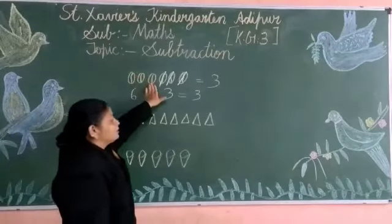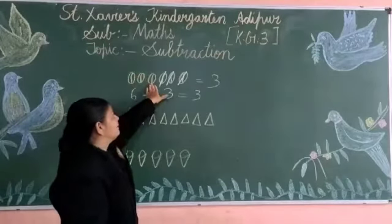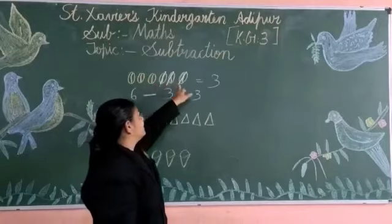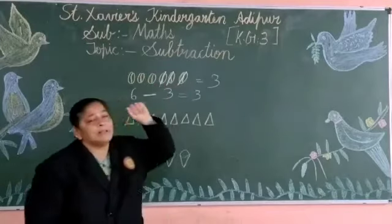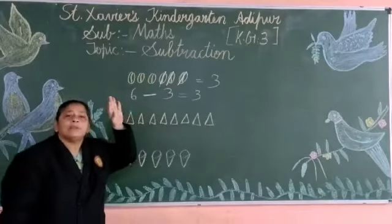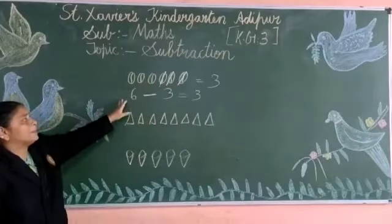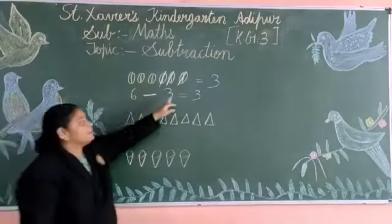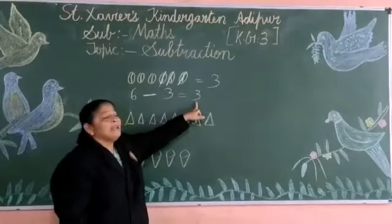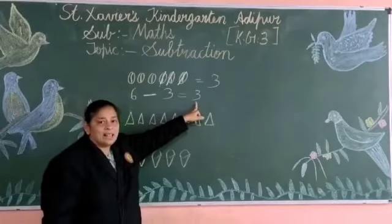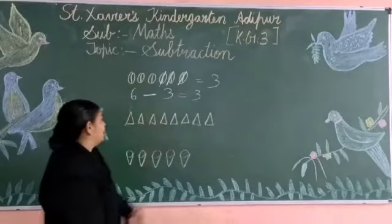Aapke paas 6 balls tha. 6 balls mein se teen ball aapne kisi aur ko diya. Toh abhi aapke paas kitna bacha gaya? Yes, number 3.